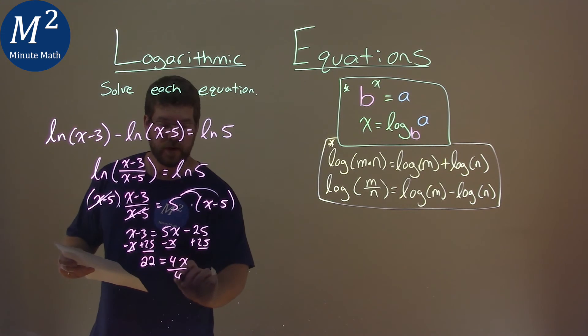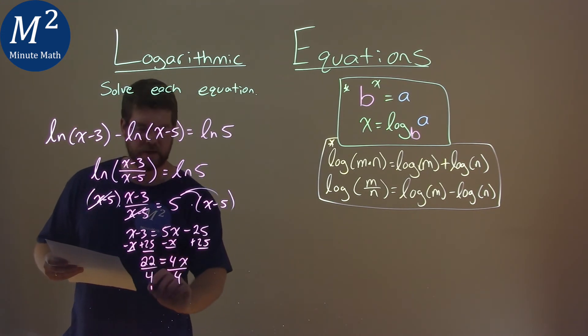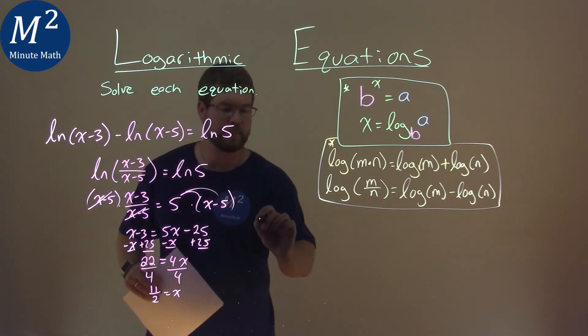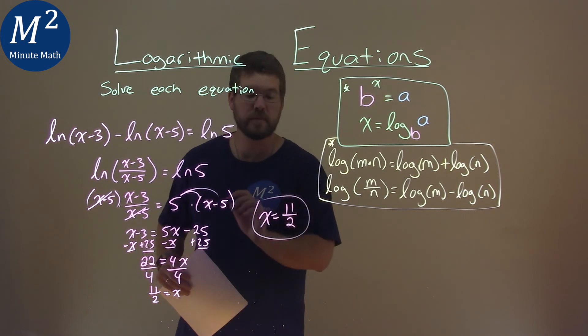From there, divide both sides by 4, and 22 over 4 simplifies to be 11 over 2. That's equal to x. And so my final answer is x equals 11 over 2.